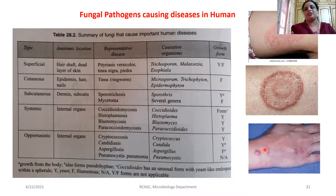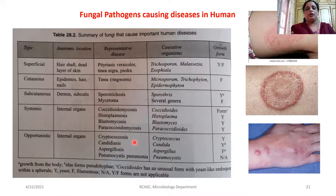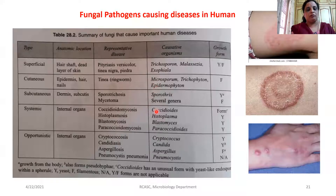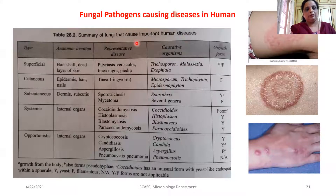Opportunistic infections happen into the internal organs — for example, aspergillosis, which causes pneumonia-like infection, candidiasis, and cryptococcal infection. These are opportunistic infections caused by various fungi. The major groups of fungi causing these infections are Trichosporon species, Trichophyton species, Microsporum species, Epidermophyton species, Candida species, Histoplasma species, and Aspergillus species — which have been studied as causing various diseases in humans.